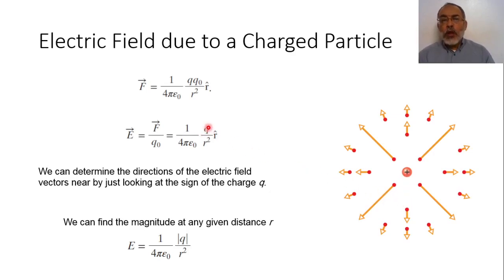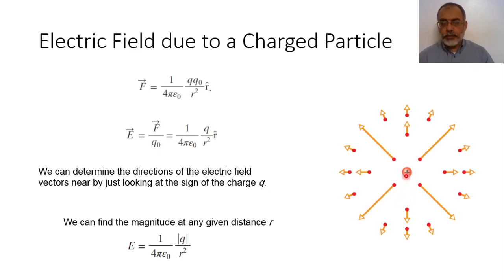If the value of Q is positive, the direction of the electric field goes outward from the charge. If Q is negative, the direction of the electric field goes inward toward the charge. In this way, we can determine the direction of the electric field vector just by looking at the sign of the charge — whether it is positive R or negative R direction.